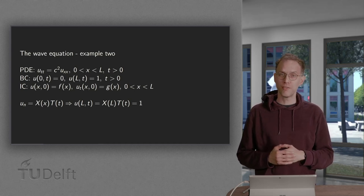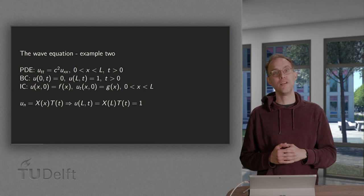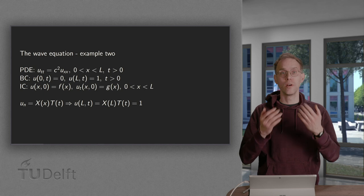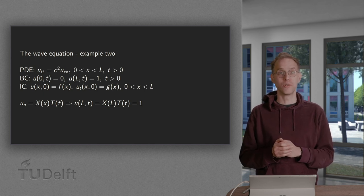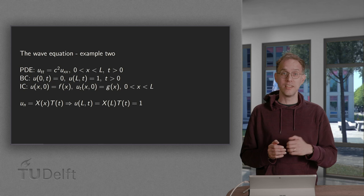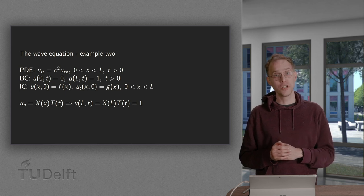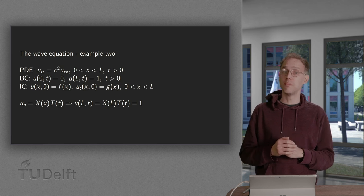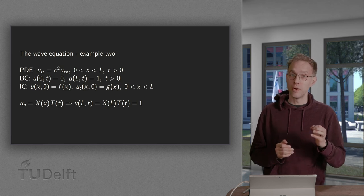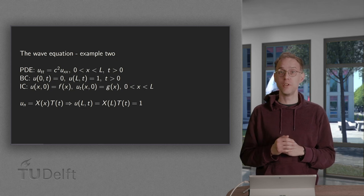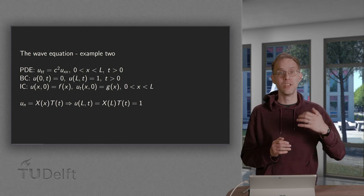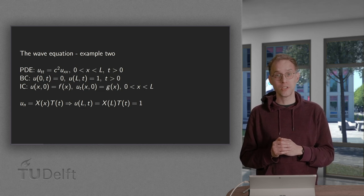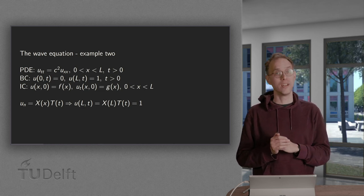What happens to the solution of our wave equation if we do not set the displacement to zero, or both the same values on both boundaries? In that case, we cannot use separation of variables straight away, and we have to be a bit more careful. We can use a method similar to the one we used for the heat equation. Let us see how this works out — what are the similarities, and what are the differences?